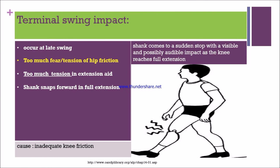Next is terminal swing impact. This means a sudden stop at the extension period — if the leg suddenly stops during extension with an audible sound, it is called swing impact. The main cause is inadequate knee friction, and it always occurs at the late swing phase.